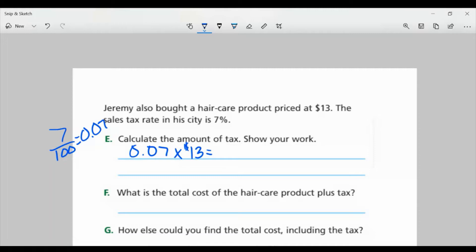This will give us 0.91, or 91 cents. So that means the tax is 91 cents. For Part F, what is the total cost of the hair care product plus tax? Well, I know it's $13 and we're going to add it to the tax, which was 91 cents. And this is going to give us $13.91.